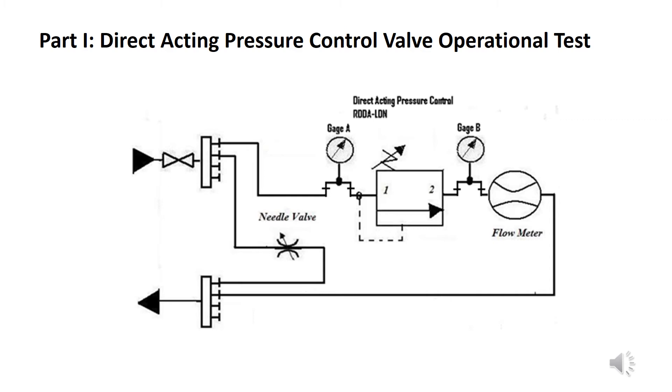In part one, this circuit is only designed to demonstrate the basic operation of a direct acting valve. So, regardless of what the setting is on the relief valve, the direct acting valve will not open up until its setting is reached. So, initially, if we set the direct acting valve at any pressure value, until that pressure is reached, we will not see any buildup on B, nor will we see any flow on the flow meter.